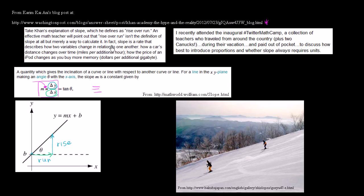And then the rest of the statement, in fact, slope is a rate that describes how two variables change in relation to each other. How a car's distance changes over time, how the price of an iPod changes as you buy more memory. And this is also kind of wrong. A slope can represent a rate of change, but it depends on which variable is plotted on which axis.